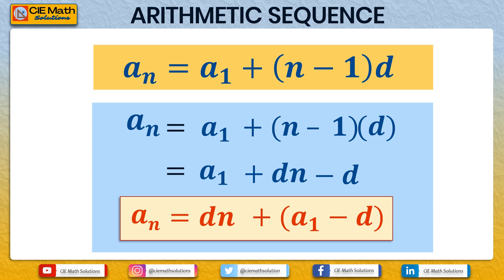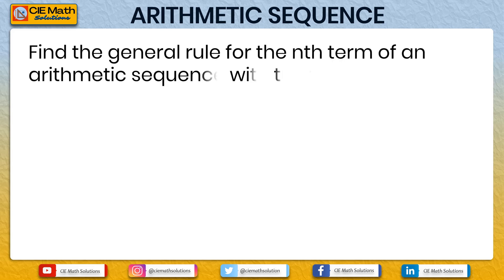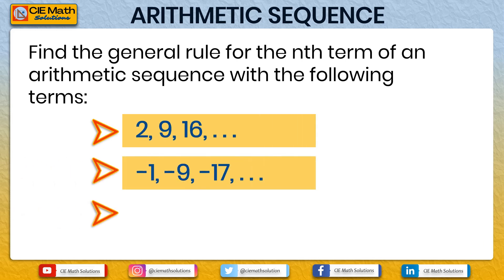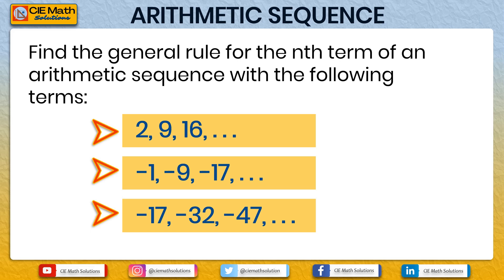Now it's your turn. Find the general rule for the nth term of arithmetic sequences with the following terms: (1) 2, 9, 16; (2) −1, −9, −17; (3) −17, −32, −47. Please pause the video, try to answer the items as fast as you could, then press play when you are done.